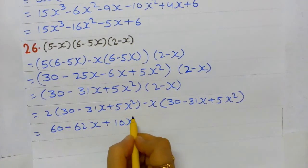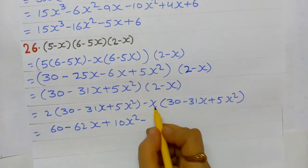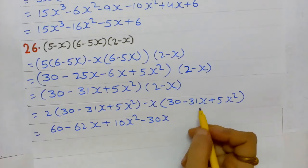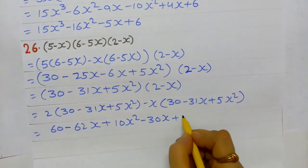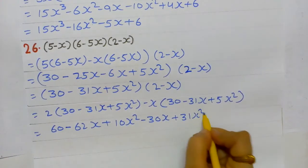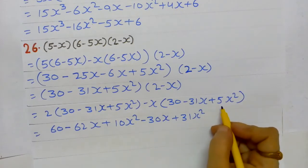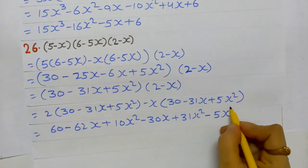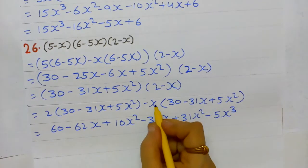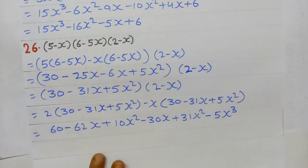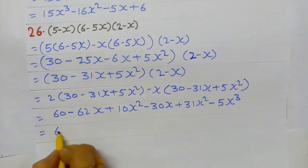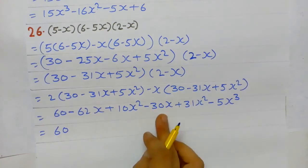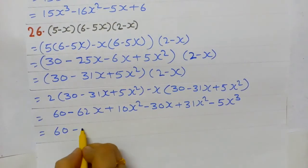2 × 5x² = +10x²; (-x) × 30 = -30x; (-x) × (-31x) = +31x²; (-x) × 5x² = -5x³.